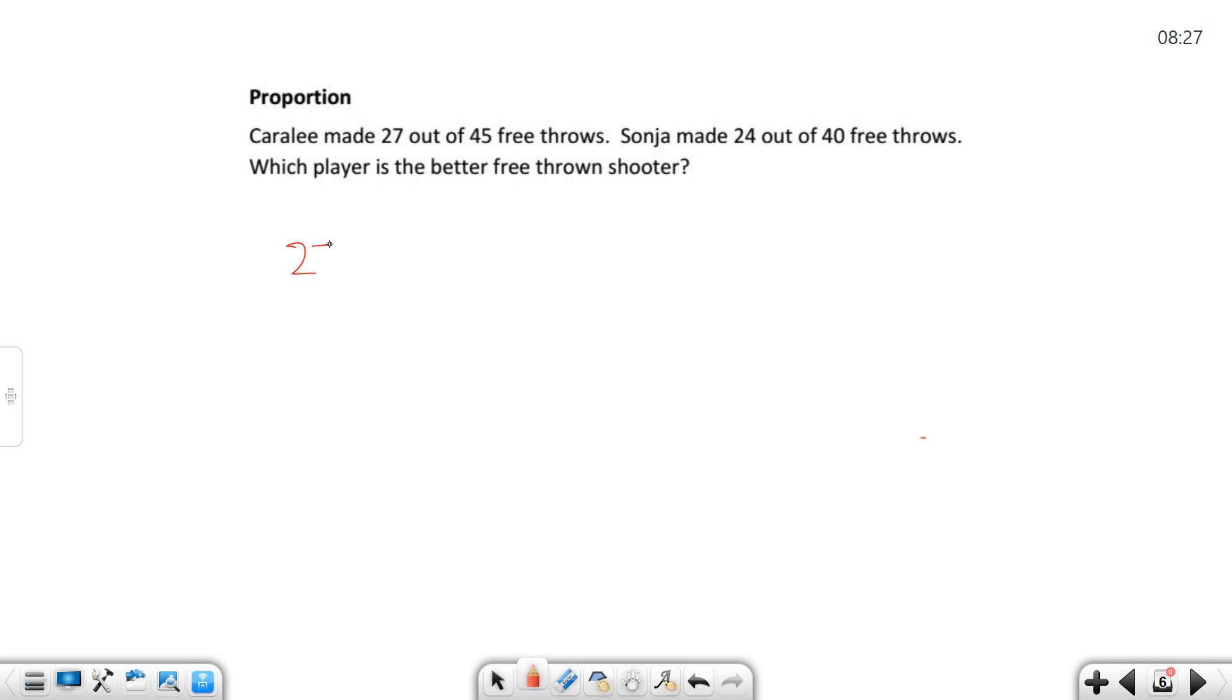So if we take Carolee, she made 27 out of 45. And if we take Sonia, she made 24 out of 40. You could say Carolee made more shots than Sonia, but that's because she took more shots. So you have to compare them by their percentages or by their proportion rather than who actually made more shots.